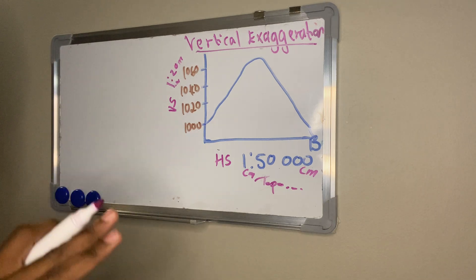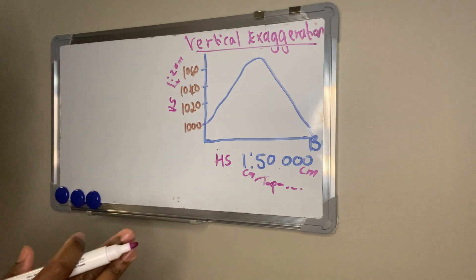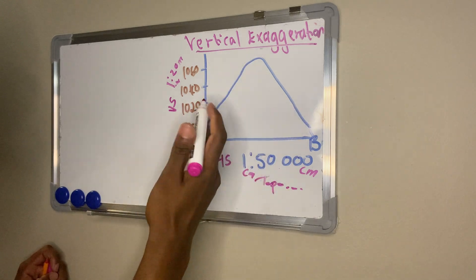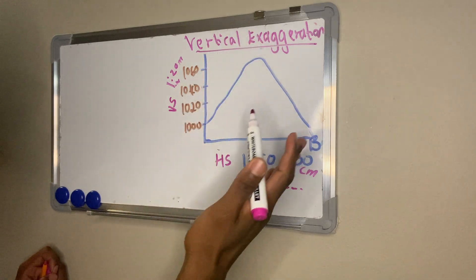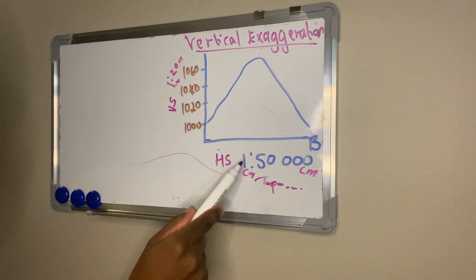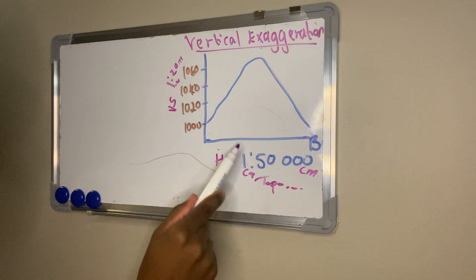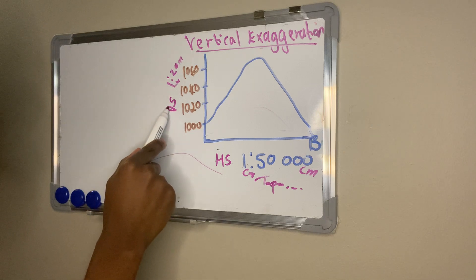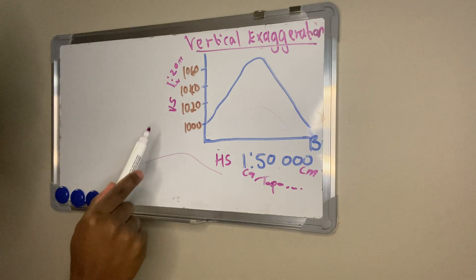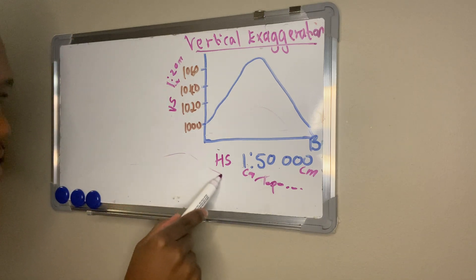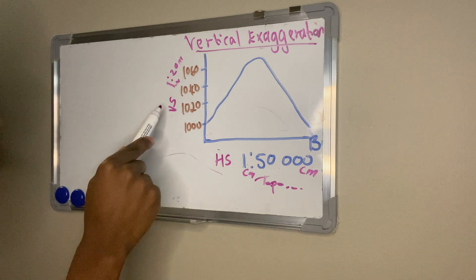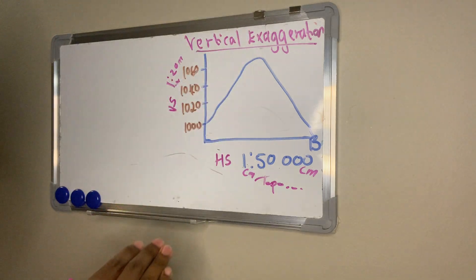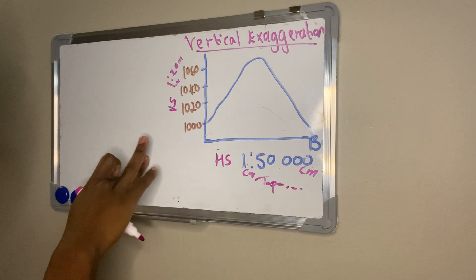The reason we exaggerate the vertical scale is to make slopes easier to recognize. For example, a mountain will be easier to see on a cross section. If we used the same scale — 1 to 50,000 — for both horizontal and vertical, it would be very difficult to see relief features like flat areas, so we exaggerate the vertical.